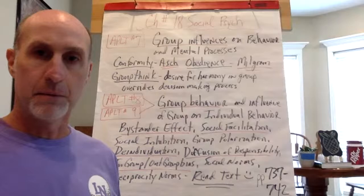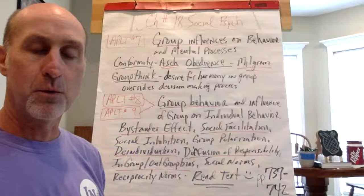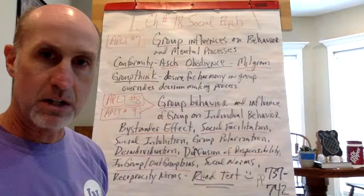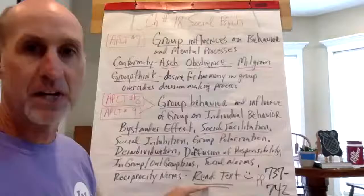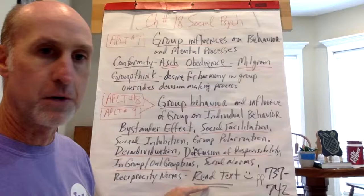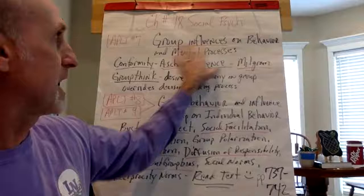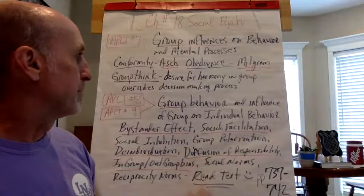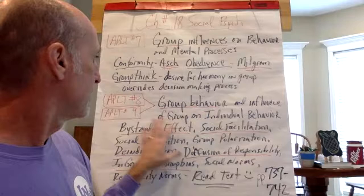Today is basically all in the same area — it's pretty much just over group influences. I could have grouped seven, eight, and nine all together, but I wanted to spread out number seven because they include Milgram and Asch, which we've already talked about. The bulk of eight and nine is vocab. This starts on page 737 in our book. The AP learning target is: how do groups influence behavior and mental processes?